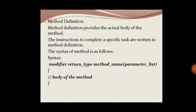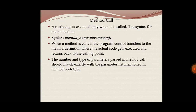Next is the method definition, which provides the actual body of the program. The instructions used to perform a specific task are written inside the method definition. The syntax includes: modifier (access specifier), return type, method name, and parameter list, with the body of the method inside. The method gets executed only when it is called. The syntax for method call is: method name with parameter list. When the method is called, program control transfers to the method definition, where the actual code executes and returns back to the calling point. The type and number of parameters passed in the method call should match the parameter list mentioned in the method prototype.